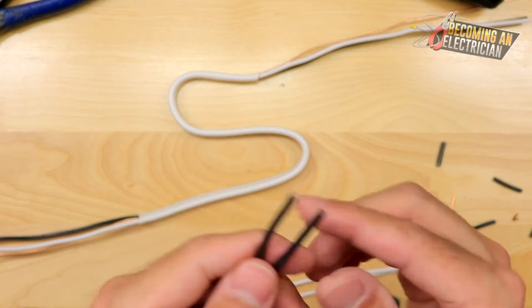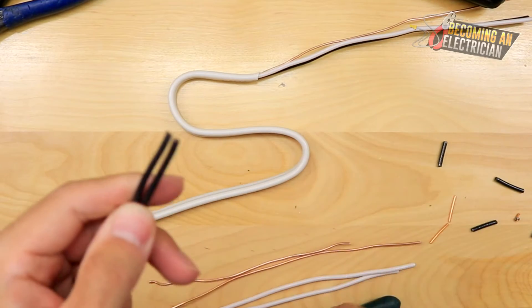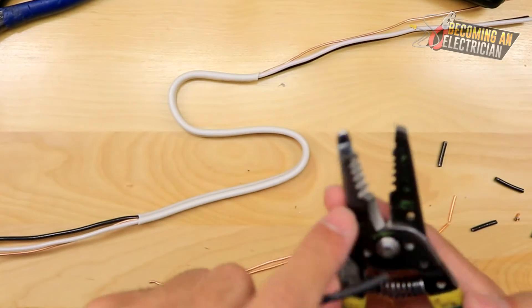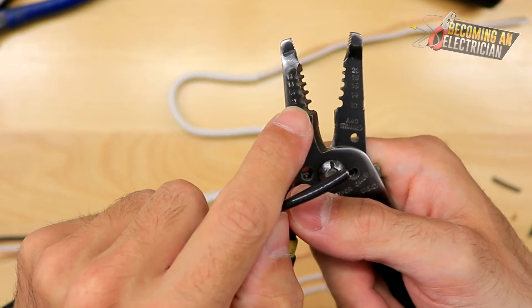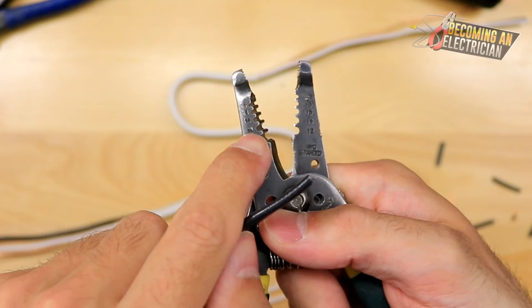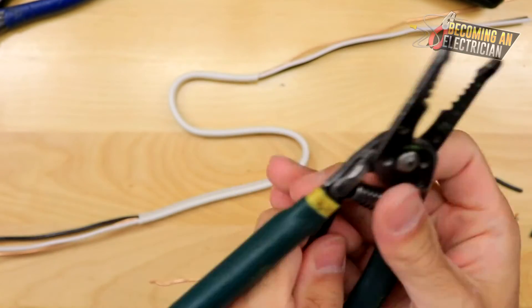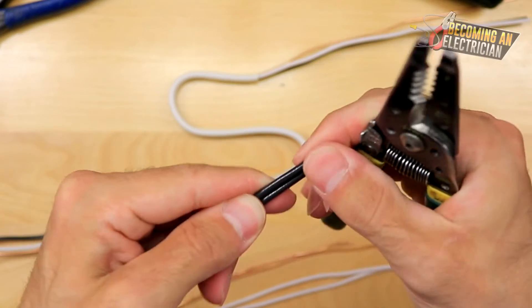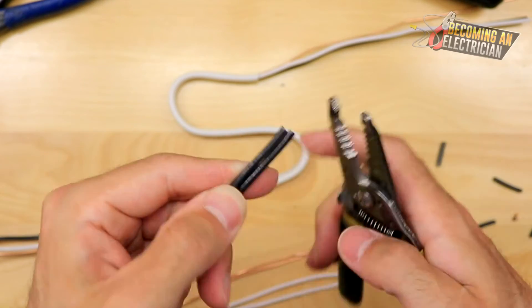A couple more tricks I want to show you guys is sometimes what you could do is you can double strip. This is totally cool because you're putting it in the 14 and the 12. The 12 is actually bigger than the wire, so you're not going to compromise the wire. Usually when I do that, you just kind of line them up, just wiggle them a little bit to try to get them lined up.